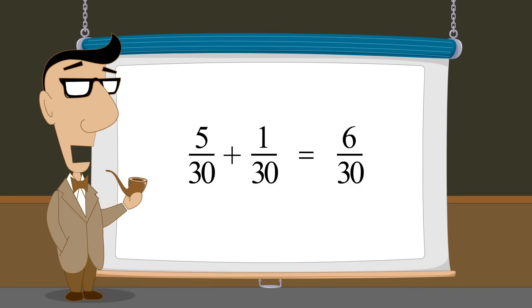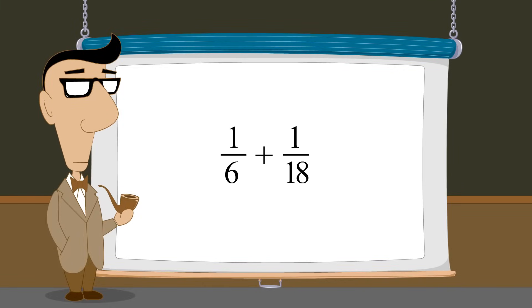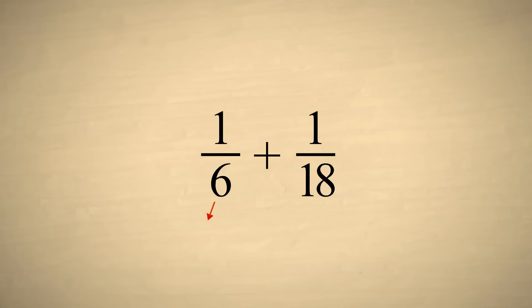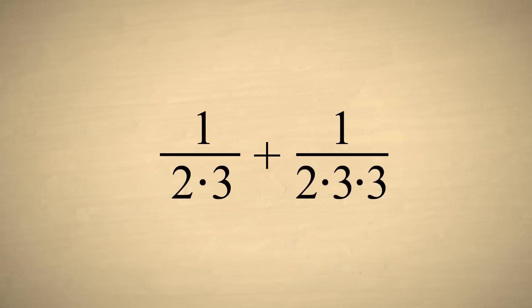As another example, let's say that we wish to add one-sixth plus one-eighteenth. We first factor each denominator. The first denominator has only one factor of three, while the second denominator has two.